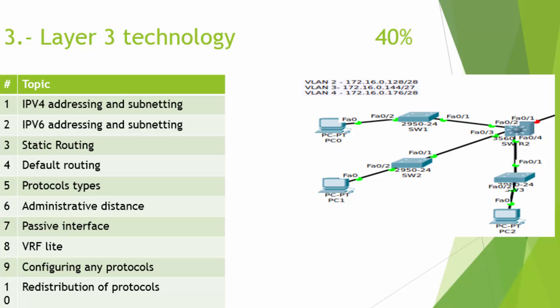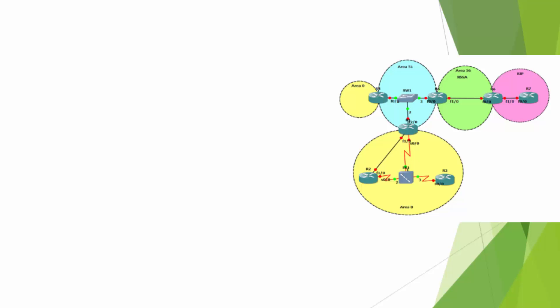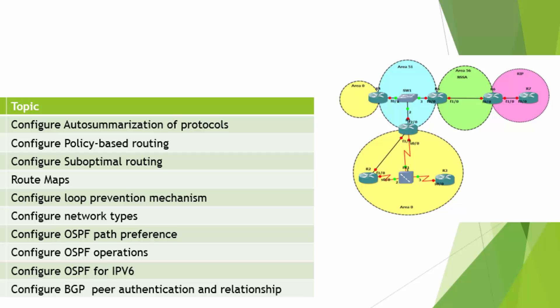We're going to be talking about IPv4 addressing and subnetting, the difference between IPv4 and IPv6, how to do subnetting, what static routing is and how it works, default routing, and the different protocol types: OSPF, EIGRP, RIP, and BGP. What is a passive interface? What is VRF? The configuration of each one of the protocols mentioned. The redistribution between protocols — for example, how does redistribution between OSPF and EIGRP work? In this graphic you're going to see different areas, which is usually how OSPF works. We're going to talk about auto-summarization of the protocols.